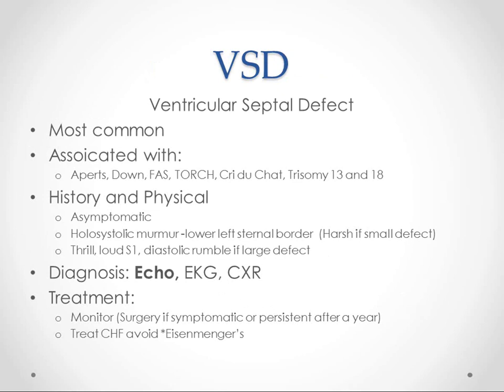The most common acyanotic and the most common overall congenital heart disease is ventricular septal defect. It's associated with Apert's, Down syndrome, fetal alcohol syndrome, the TORCH infections, cri du chat, and trisomy 13 and 18. This list is a pretty good list of the most common causes of congenital heart defect, and as ventricular septal defect is the most common, it's associated with basically all of them.